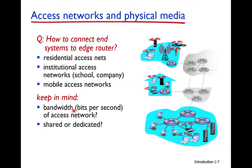All access networks will be discussed based on two parameters: first, their bandwidth — how many bits can be sent per second, also called data rate; second, whether the access network is shared or dedicated. Shared means multiple users share the access network; dedicated means the access network is dedicated to a particular user. Current access networks can be categorized into these three types.